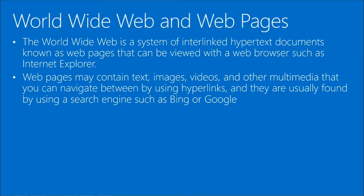The World Wide Web, most commonly referred to as WWW, is a system of interlinked hypertext documents known as web pages that we browse with a web browser such as Internet Explorer. Web pages can contain text, images, videos, pictures of cats, pictures of dogs, blogs — Facebook, Bing, Google — tons of things use the web.